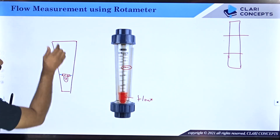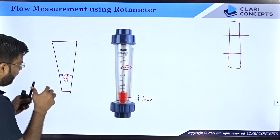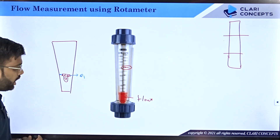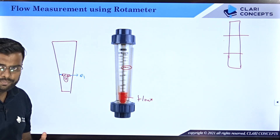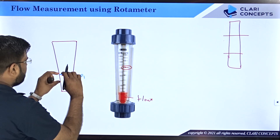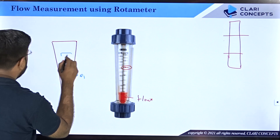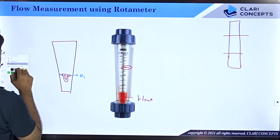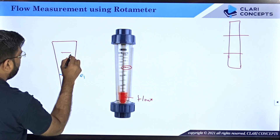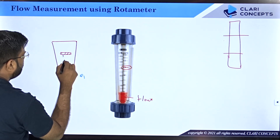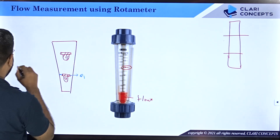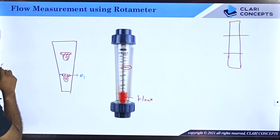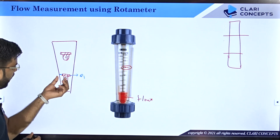At some flow rate q1, the float settles at a certain position. If you increase the flow rate, the float changes its position and rises to a new, higher position corresponding to the higher flow rate q2. The question is: why does the float change position, and how does that position reflect the value of flow rate?